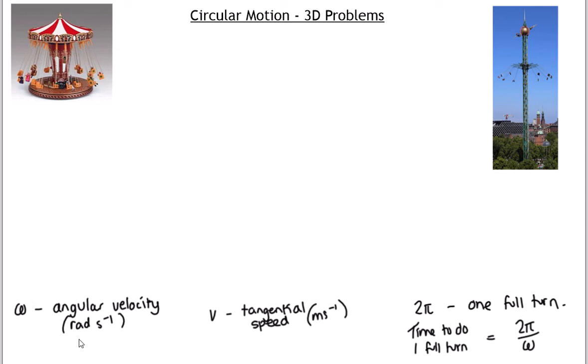A couple of things to remind you of: omega is the angular velocity — how quickly you're turning in radians. v in any equations is your tangential speed, your straight-line speed at that point in time. When working in radians, 2pi is one full turn, and 2pi divided by omega gives you the time for one full turn. So if omega is 4pi — going around twice per second — 2pi divided by 4pi is 0.5, so it takes half a second to do one turn.